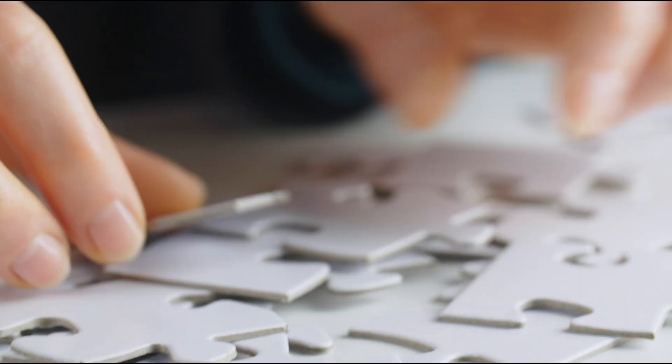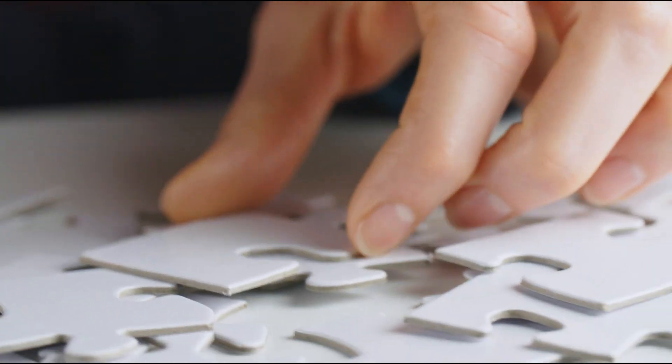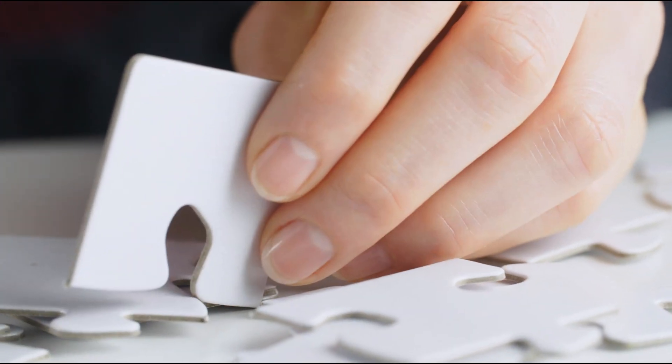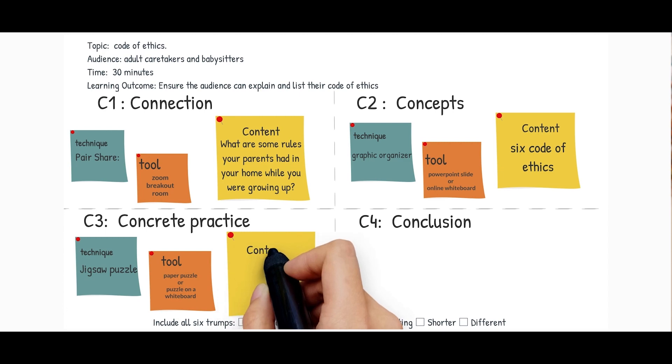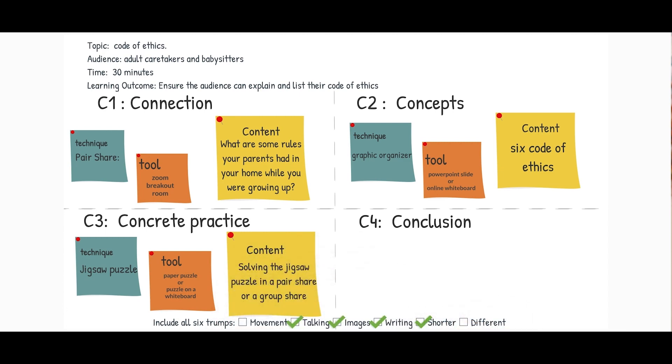Now we're on to the third C: concrete practice. Here learners get hands-on experience practicing what you taught them in C2. Design activities where they can apply what they learned — through simulations, role plays, or real-life projects. This practical application cements their learning, builds confidence, and enables the trainer to measure that the learner has met the learning objective. For my training, I will create a jigsaw puzzle that learners solve to reassemble pictures of the codes of ethics. The technique is a jigsaw puzzle; the tool is either a paper puzzle or a puzzle on a whiteboard; and the content is for learners to solve the puzzle and share their answers in a pair share or group share.